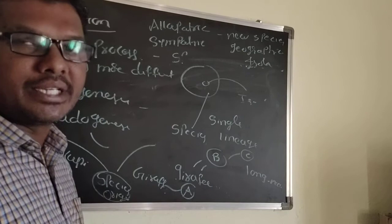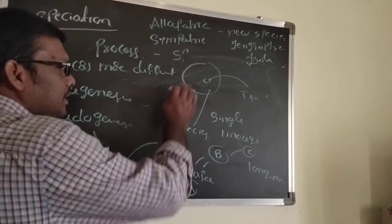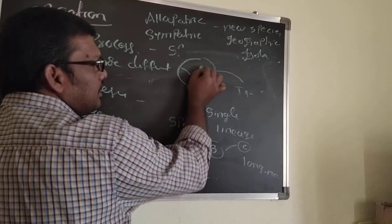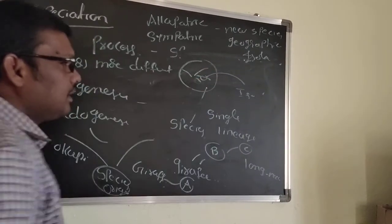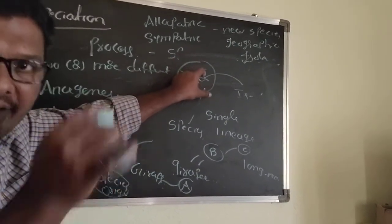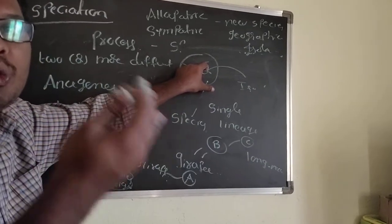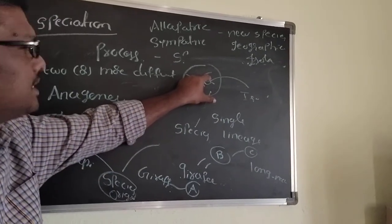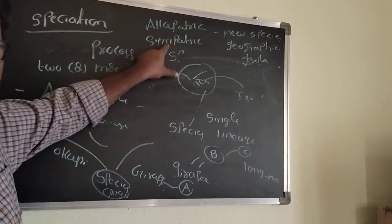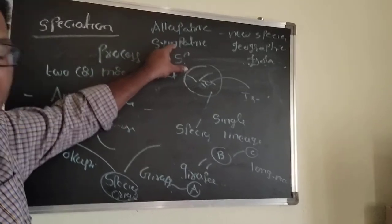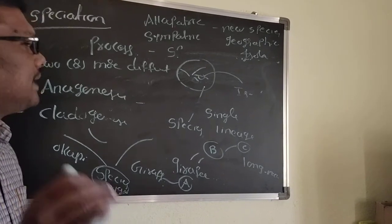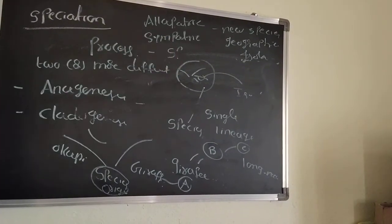Sympatric speciation means the same species enters a different area within the same habitat and forms two or more different species. They are not able to interbreed with each other. That type of speciation is called sympatric speciation.